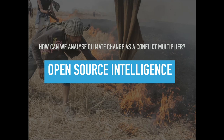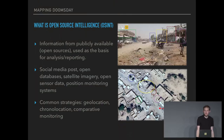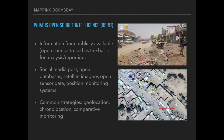How can we analyze climate change as a conflict multiplier? One way is open source intelligence, also known as OSINT. What it is, is information and investigations based on information taken from publicly available sources — also known as open sources.